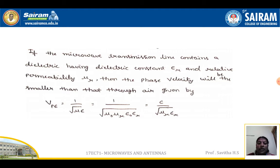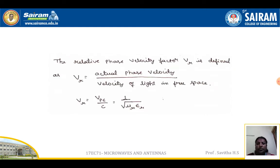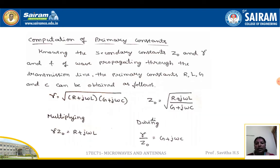So 1 divided by the square root of μ₀ε₀ can be written as c, and the phase velocity becomes c divided by the square root of μr times εr. The relative phase velocity factor vr is defined as the actual phase velocity divided by the velocity of light in free space, giving vr equal to 1 divided by the square root of μr times εr.